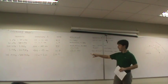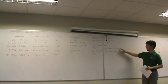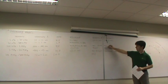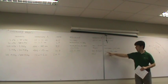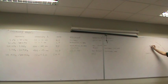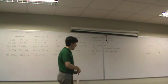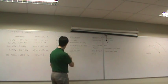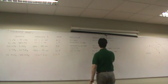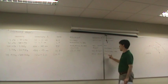At VHF frequencies, the surface wave does not exist anymore because it is too attenuated. The ionospheric wave does not exist anymore either, because above 30 MHz what happens is that you make a hole in the ionosphere and you do not bounce back.